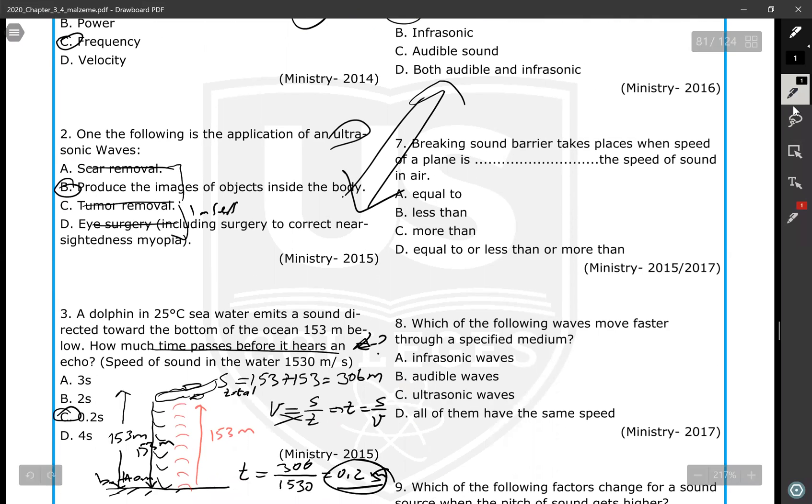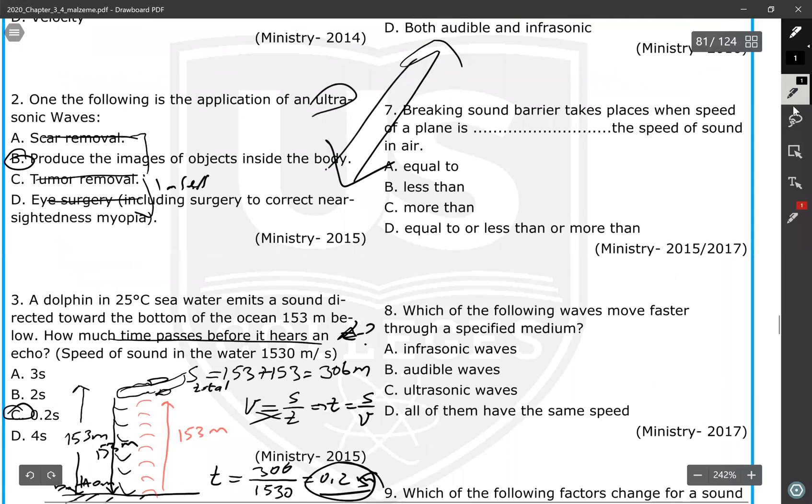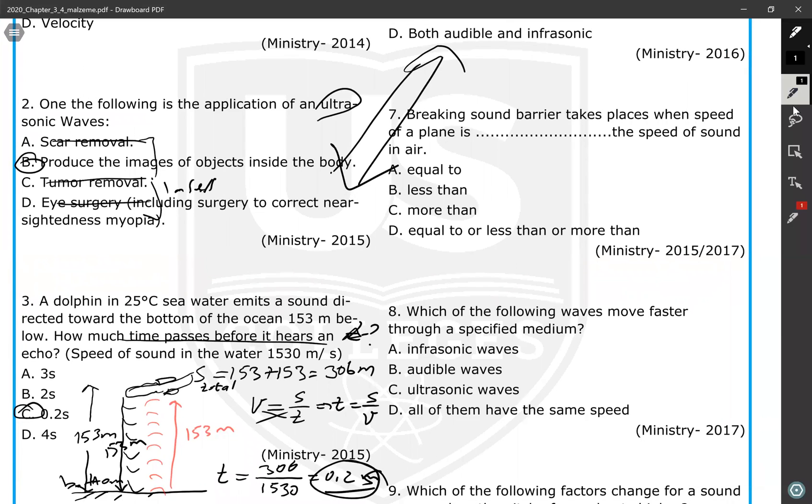Breaking sound barrier takes place when the speed of the airplane is greater than the speed of sound in air, more than. So the airplane must move faster than sound, then we can talk about breaking. This phenomenon is called breaking sound barrier.